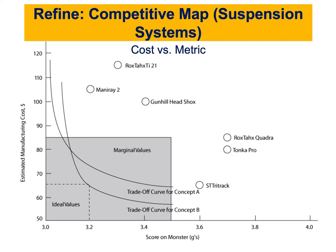If you have a mature product — for example, working in a large company with a big design and development team — you can do something called conjoint analysis. These analyses are based on customer surveys where you create hypothetical scenarios and ask end users and customers to tell you what they perceive as acceptable performance or acceptable value for the metrics. When conducting conjoint analysis, make everything as general and clear as possible — for example, a simple comparison of fuel economy and price for electric cars. Keep it as simple as possible.